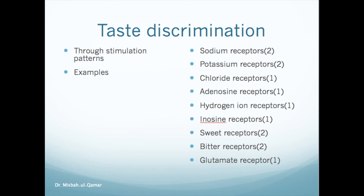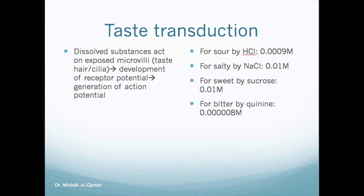Now we move on to taste transduction, which is the process in which taste chemoreceptors convert chemical energy into action potentials in taste nerve fibers. Dissolved substances act on exposed microvilli — also called taste hairs or cilia — and this leads to the development of a receptor potential and ultimately to the generation of action potentials.